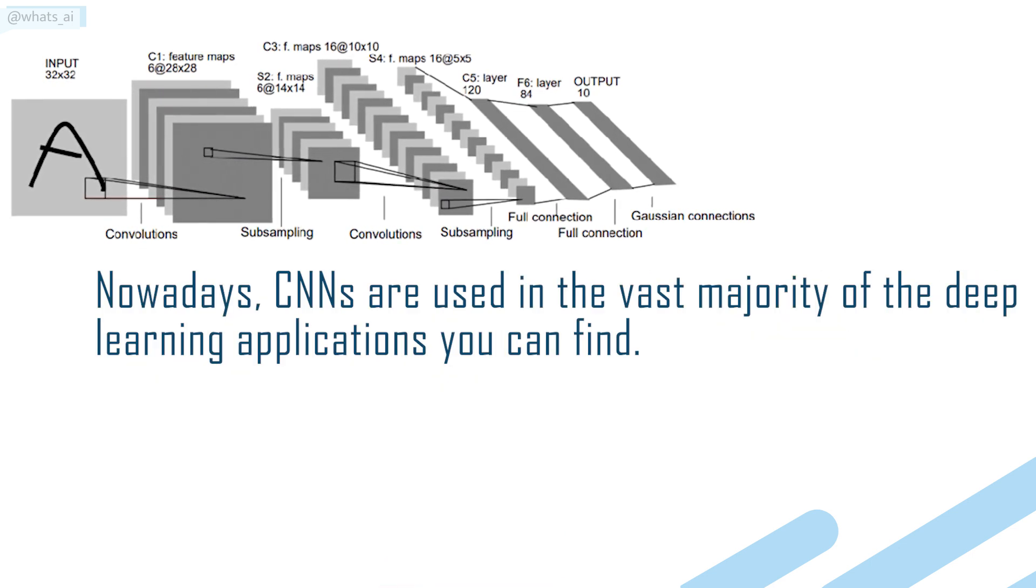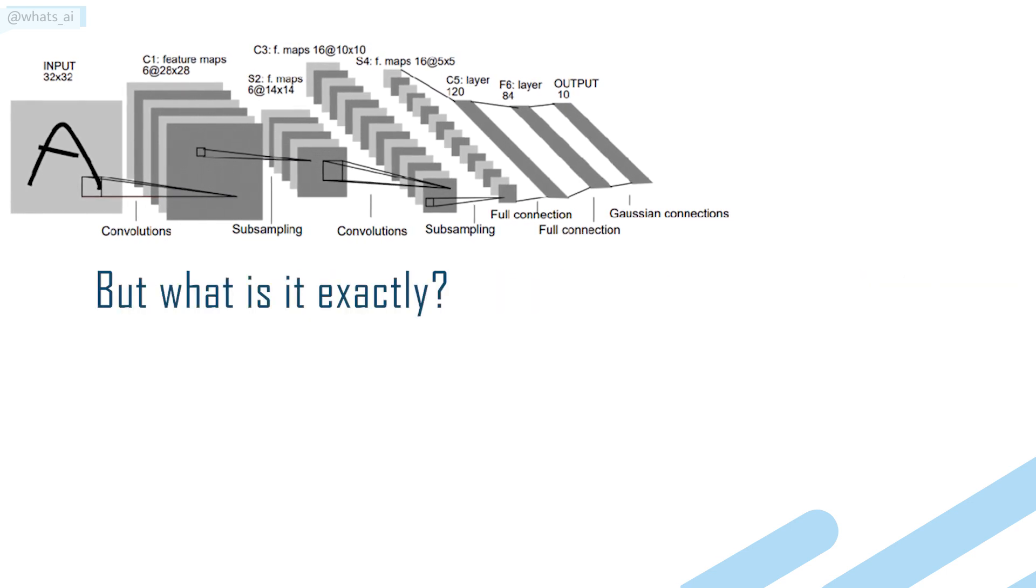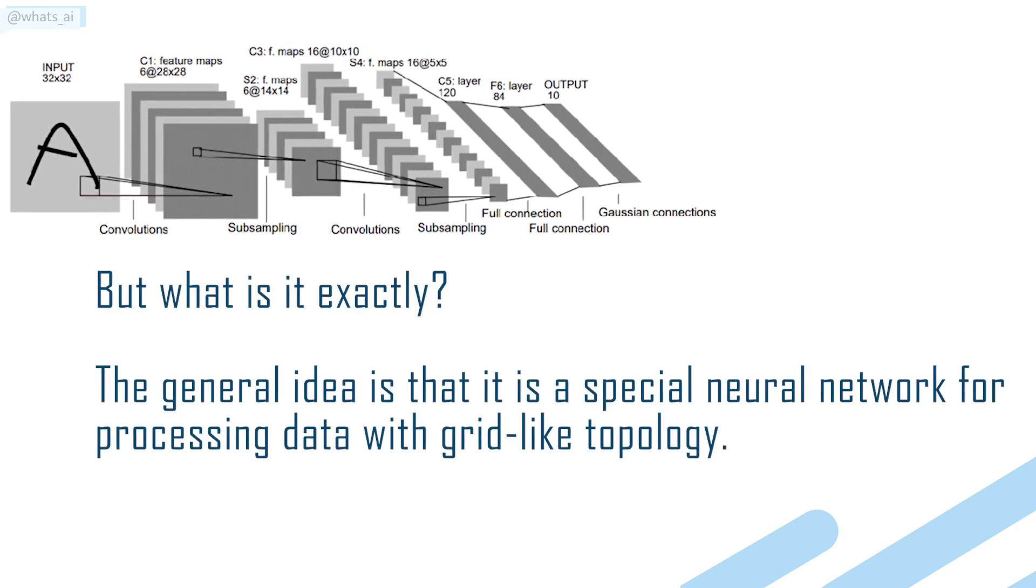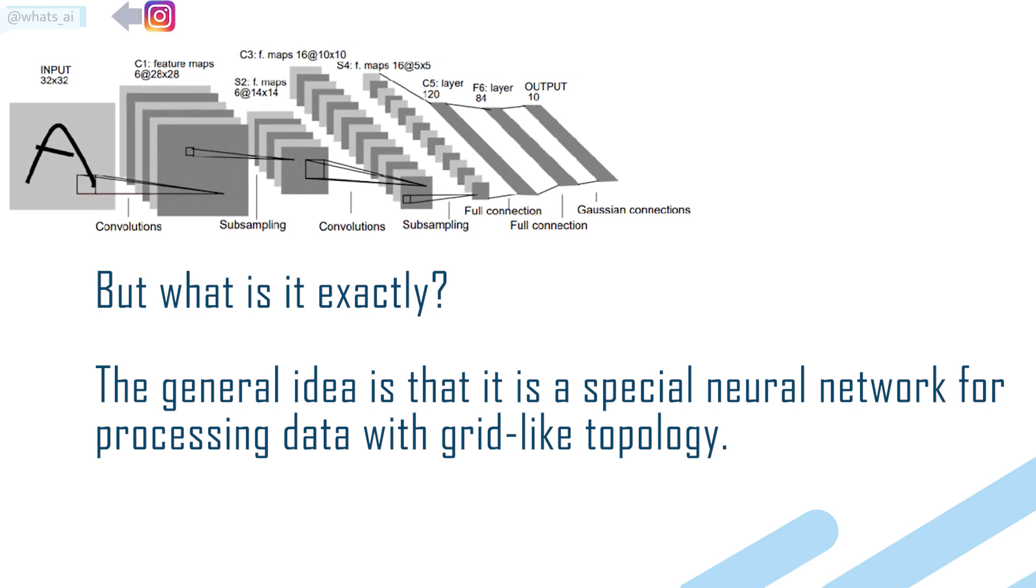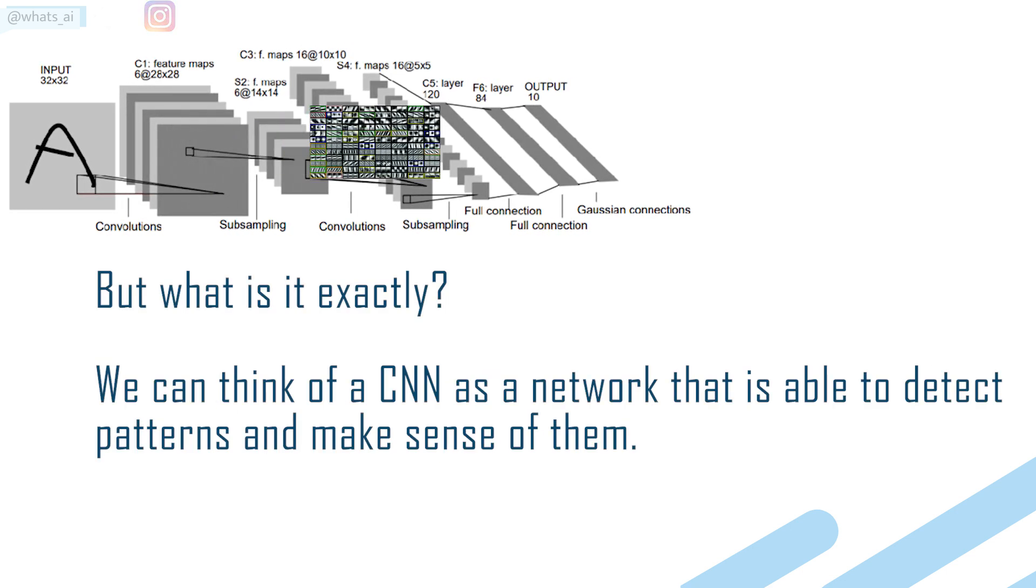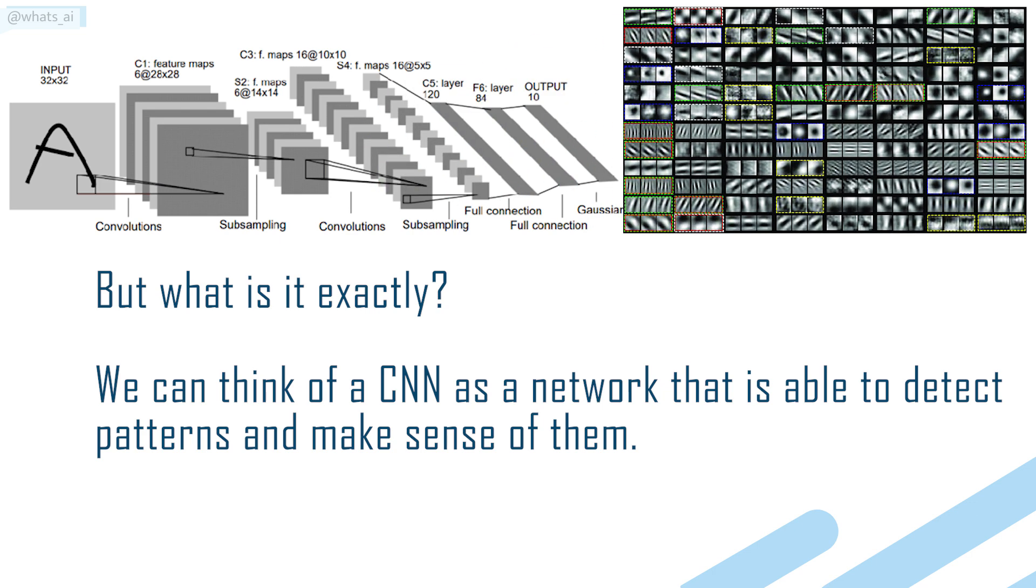Nowadays, CNNs are used in the vast majority of the deep learning applications you can find. But what is it exactly? The general idea is that it is a special neural network for processing data with grid-like topology. We can think of a CNN as a network that is able to detect patterns and make sense of them.